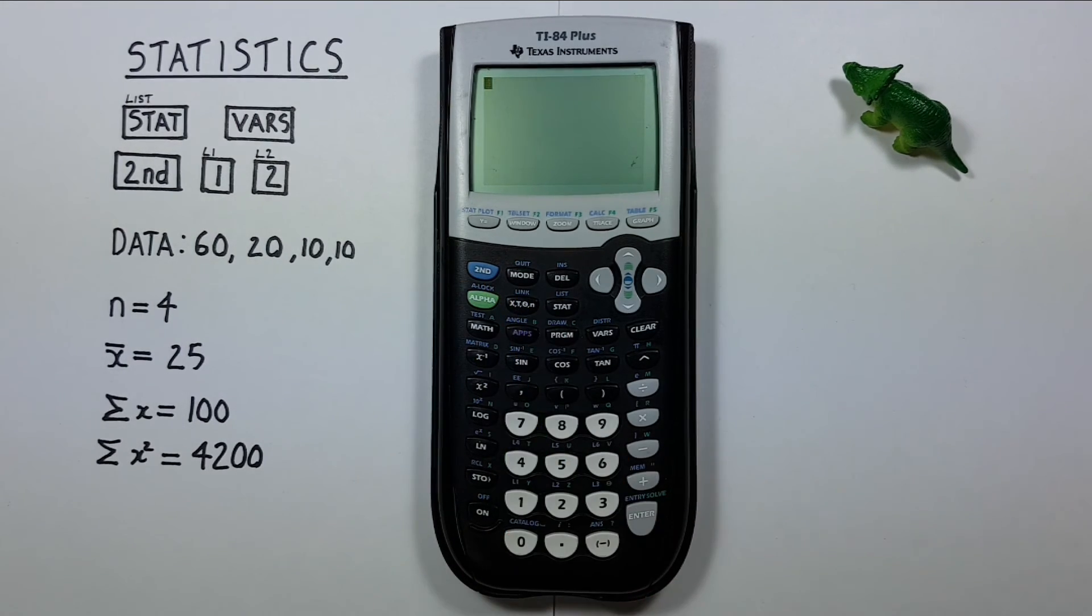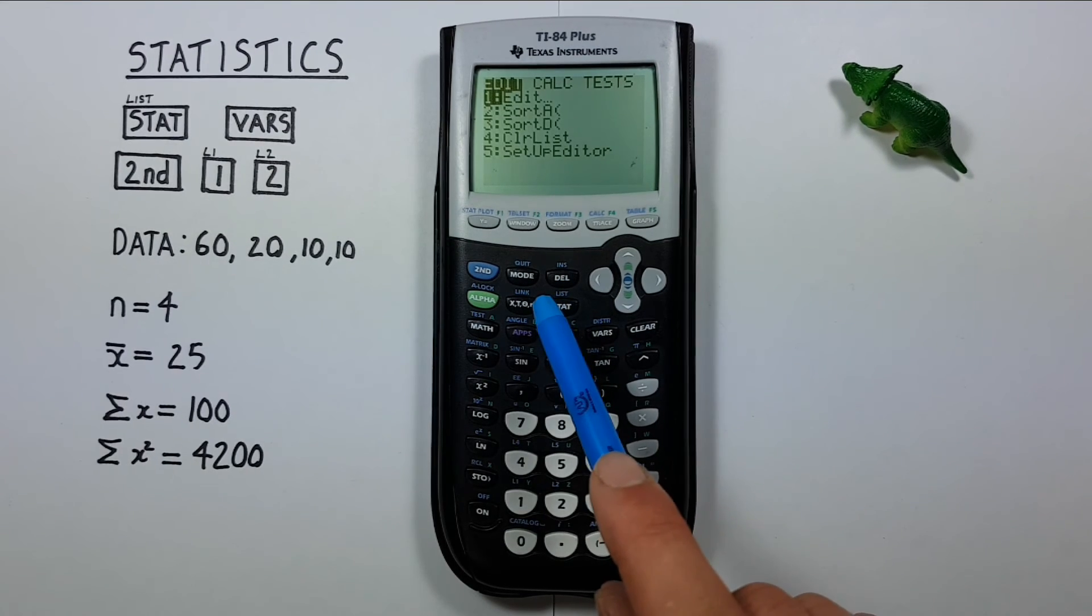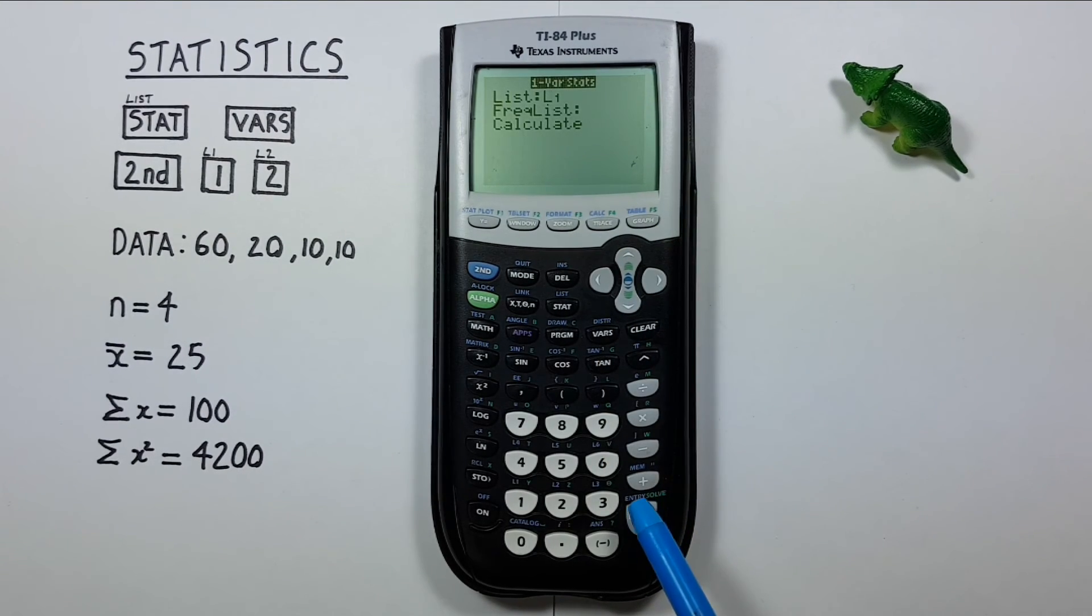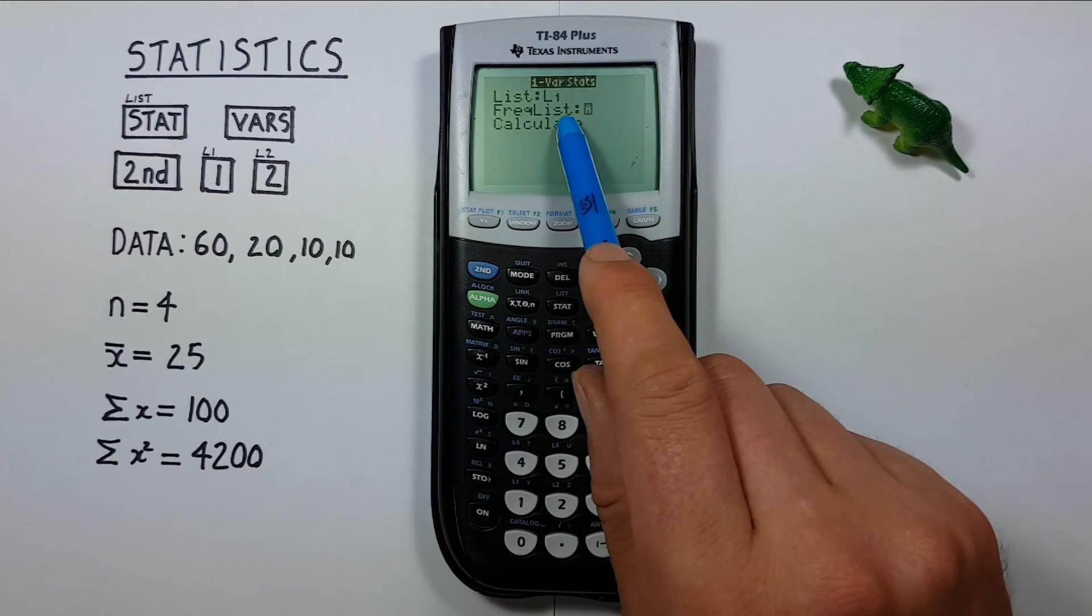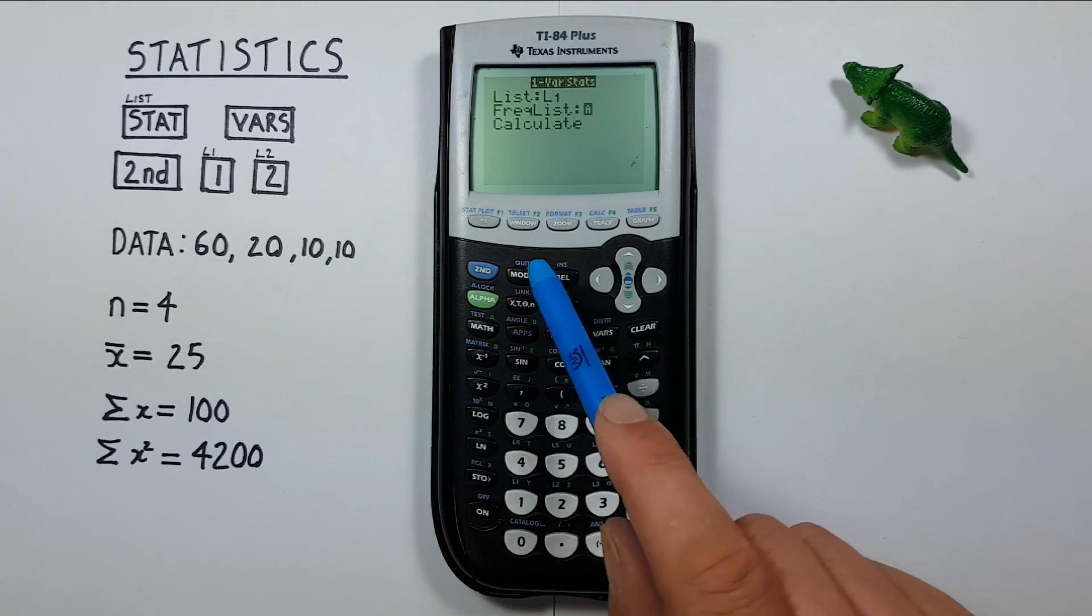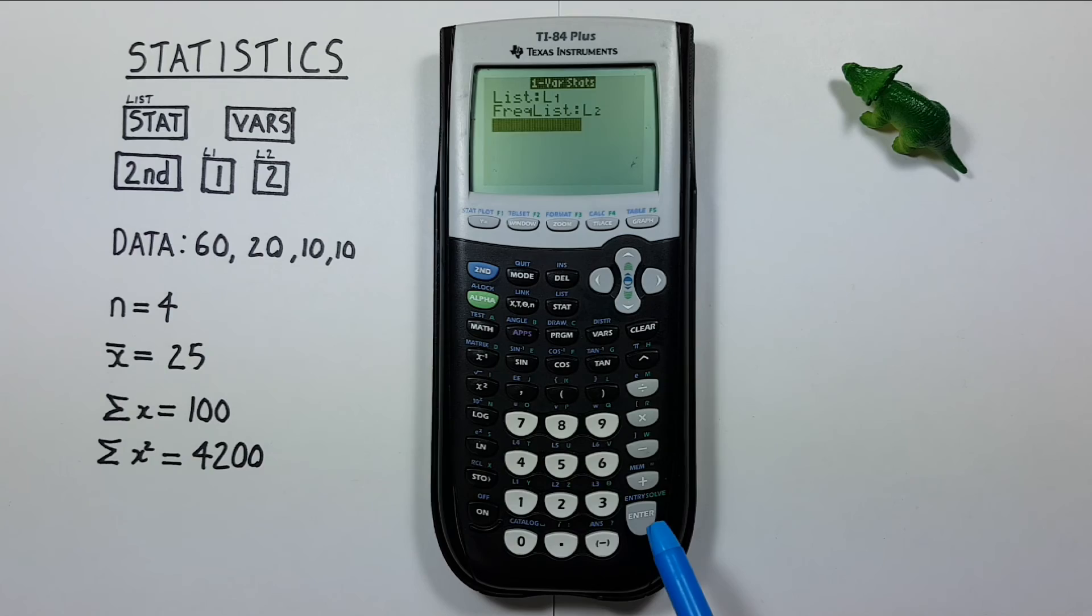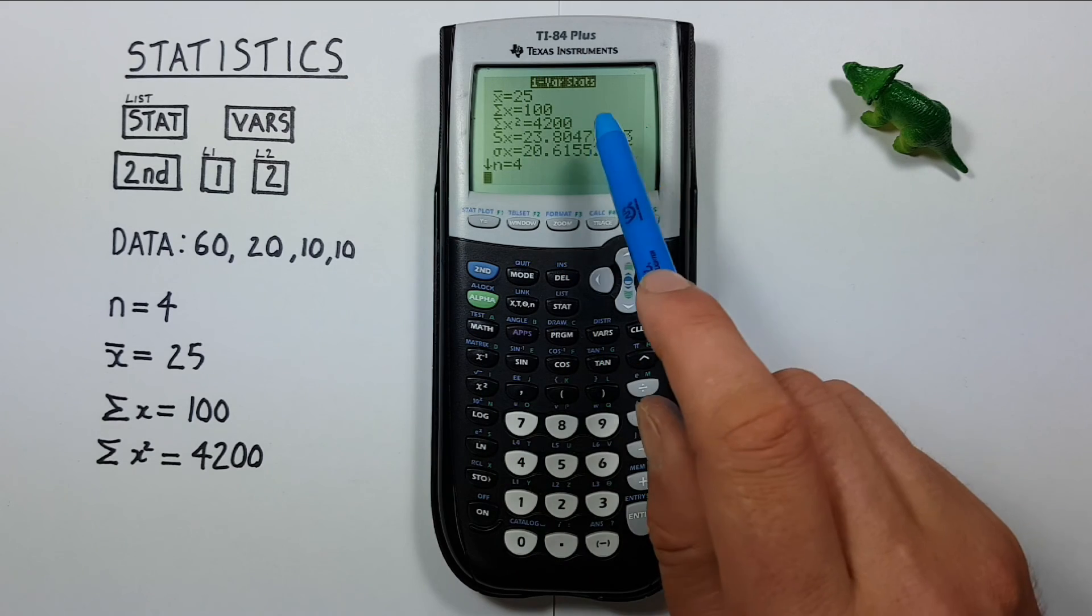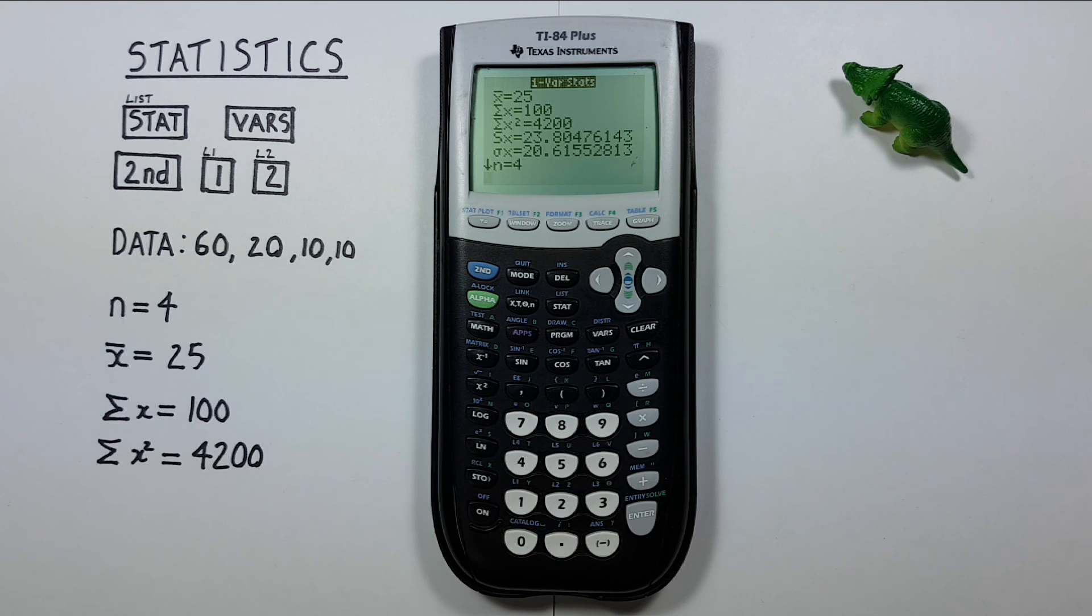If we exit out of this, now we go back to our stats, select one variable stats, keep our list 1 as our data set. But then we scroll down to frequency list and select list 2 for that. And we press second 2 to enter that in there. There's our L2. Enter. Calculate. We see we get the same results. So the calculator knows that that 10 occurs twice. All right. I hope this helps and good luck on those tests out there everybody.